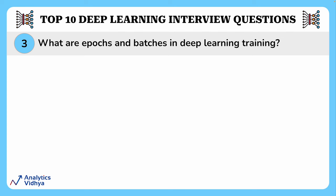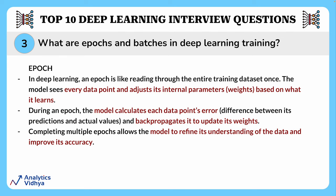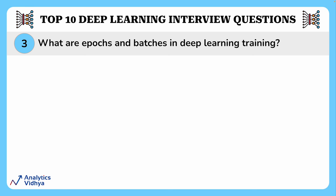The next question asks: what are epochs and batches in deep learning? Epochs and batches are like the gears and pistons of deep learning training — they work together to drive the model toward better performance. An epoch is like reading through the entire training dataset once. The model sees every data point, adjusts its weights, calculates each data point's error, and back-propagates to update weights. Completing multiple epochs allows the model to refine its understanding iteratively.